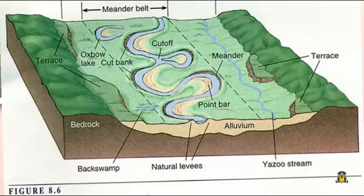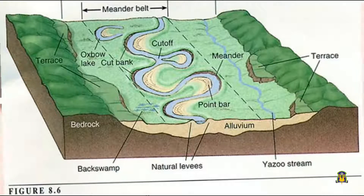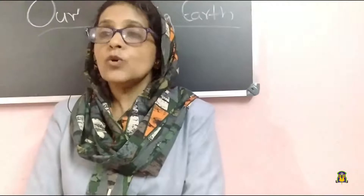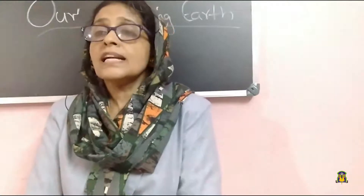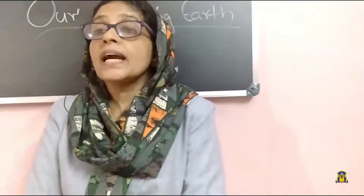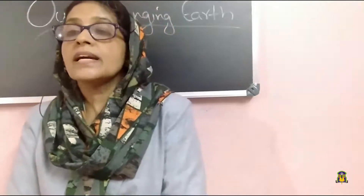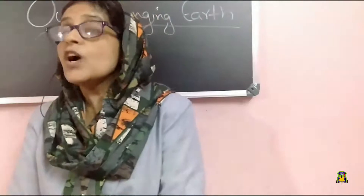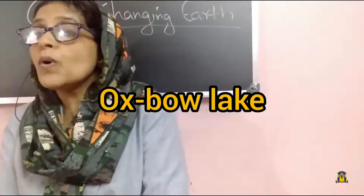As the river enters the plain, it twists and turns forming large bends known as meanders. At times, the meander loop cuts off from the river and forms a cut-off lake. These cut-off lakes are also known as oxbow lakes.